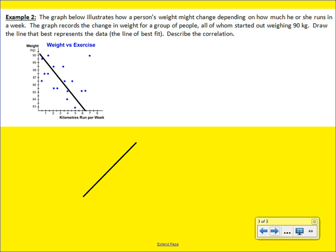But what may be bothering you is that one ordered pair way up in the corner. Yeah, it's about 90 kilograms and then seven kilometers per week. And when you have one data point that's just kind of out there, sometimes we just ignore that one and we say, well, that's an outlier.